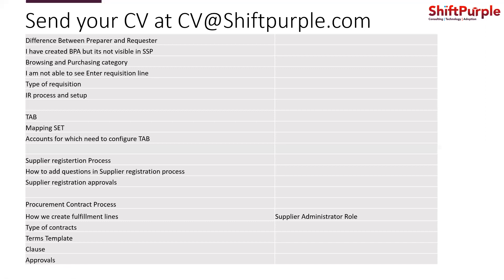If you have the Supplier Qualification Module (SQM) in place, you can add questionnaires that qualify the supplier at the time of registration. You define rule sets and conditions to present different sets of questions for prospective suppliers versus spend-authorized suppliers, and different question sets per business unit or language — for example, different questions for Spanish-language versus English-language users.